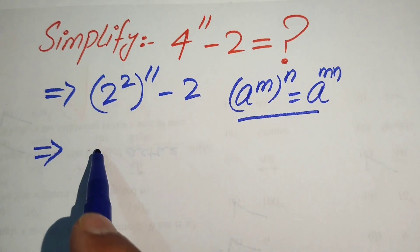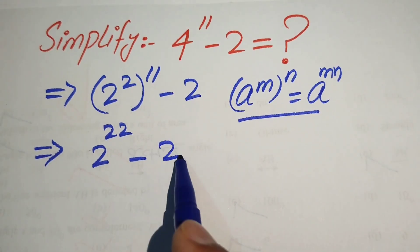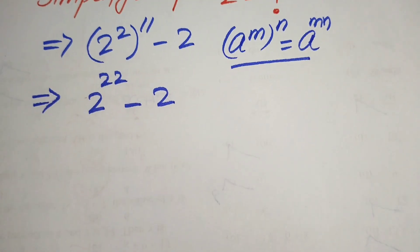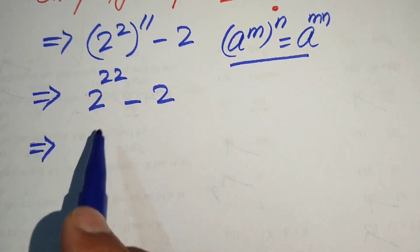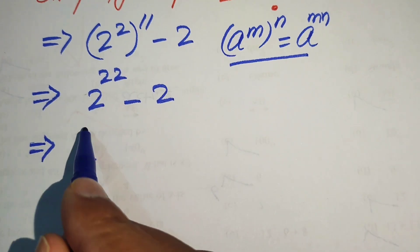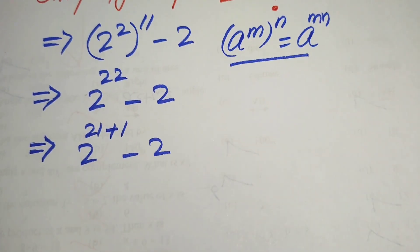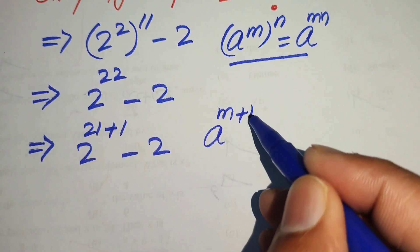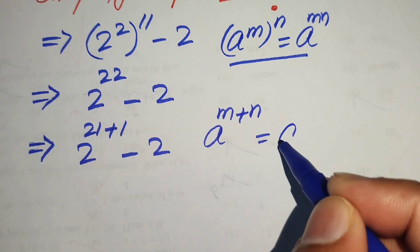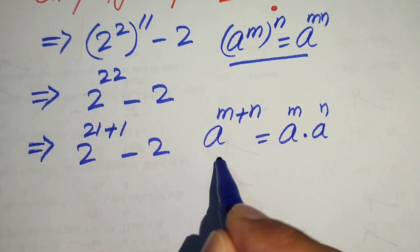We multiply these two terms and write it as 2 to the power of 22 minus 2. In the next step, we break this exponent and write 22 as 21 plus 1, minus 2. We use another exponential law: a to the power of m plus n equals a to the power of m times a to the power of n.